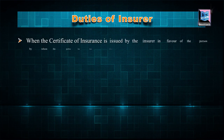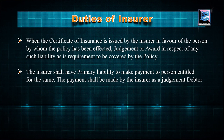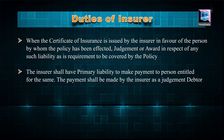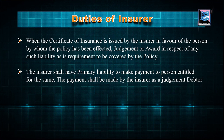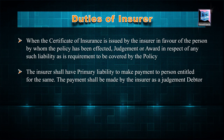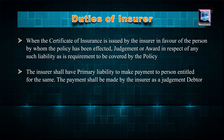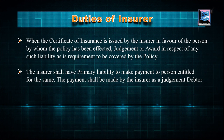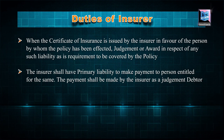When a certificate of insurance is issued by the insurer in favour of the person by whom the policy has been effected, and a judgment or award is made in respect of such liability as is required to be covered by the policy, the insurer shall have the primary liability to make the payment to the person entitled. The payment shall be made by the insurer as a judgment debtor. It is the primary responsibility of the insurer once an insured has taken the insurance policy and has made payment of the premium.